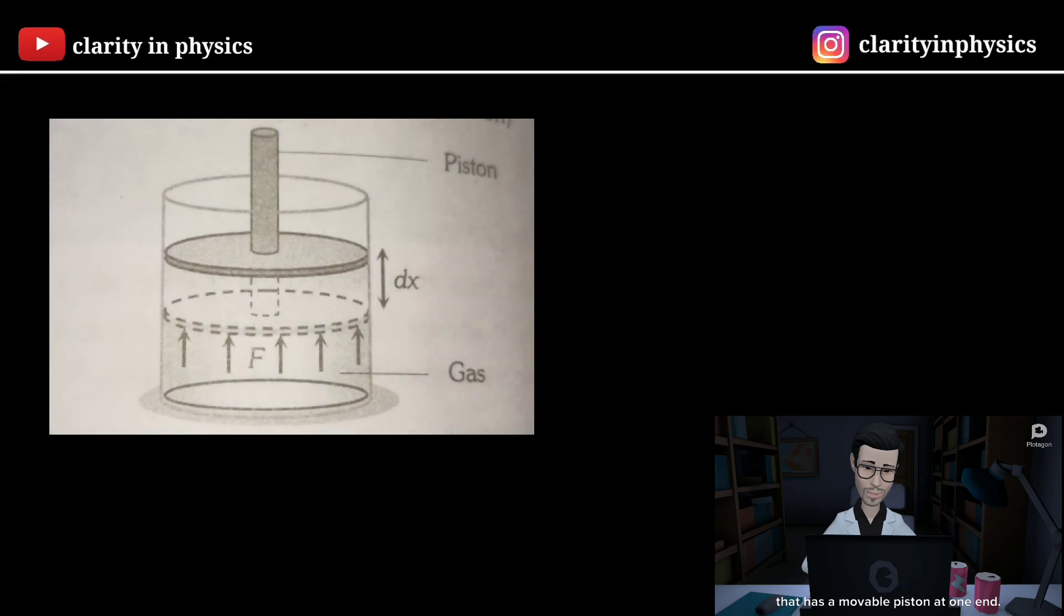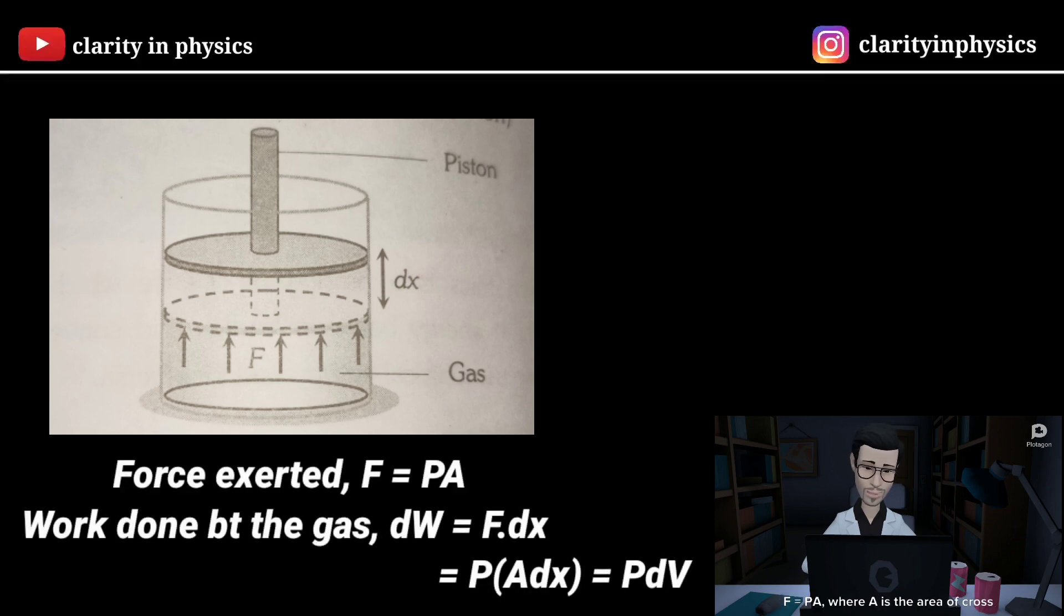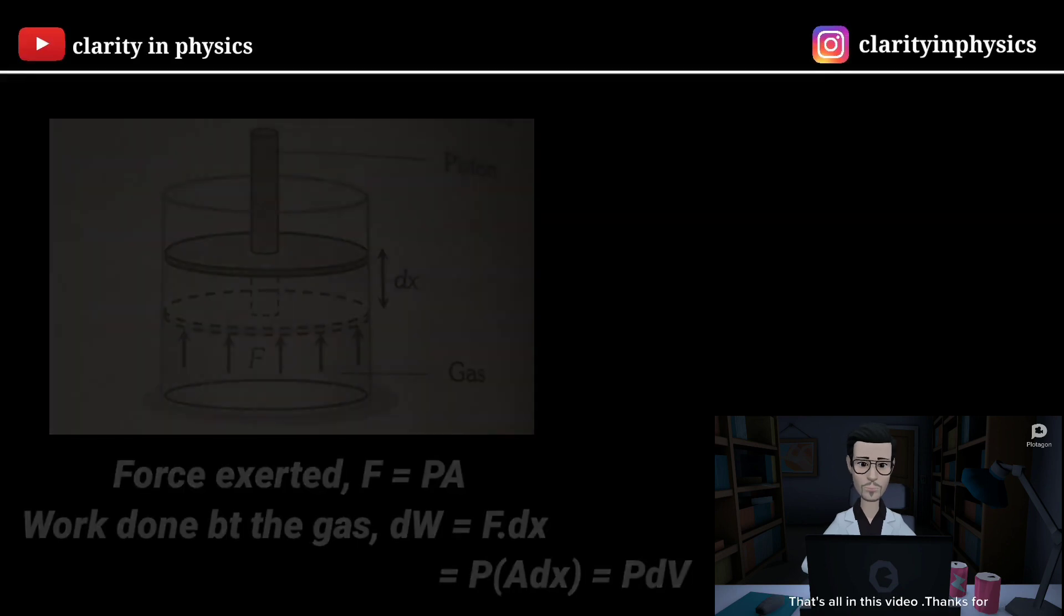Now let's discuss our last topic, work. Suppose a gas is confined in a cylinder that has a movable piston at one end. If P be the pressure of the gas in the cylinder, then force exerted by the gas on the piston of the cylinder, F equals PA, where A is the area of cross section of piston. When the piston is pushed outward by an infinitesimal distance DX, the work done by the gas DW equals F dot DX equals PADX equals PDV. That's all in this video.